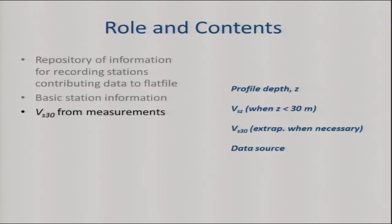Data in the site database connected with VS30 from measurements includes the profile depth. This is important because oftentimes profiles are shallower than 30 meters. When they're shallower than 30 meters, we have a column called VSZ — Z being the depth — so if you have a profile 15 meters deep, that would be VS15, the time-averaged shear wave velocity to 15 meters. That is the actual data, and we want that reflected in the database.